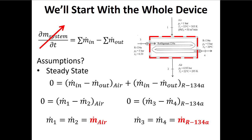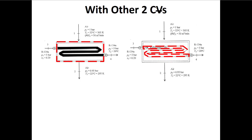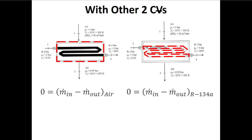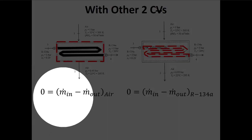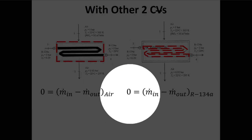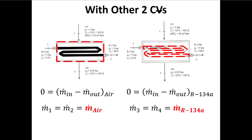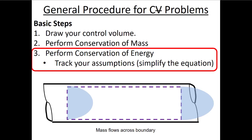This result is the same whether we used the whole control volume or drew each half separately — the answer shouldn't depend on how we draw the control volume. Conservation of mass gives us one mass flow rate for air and one for the refrigerant. Now we move to conservation of energy.